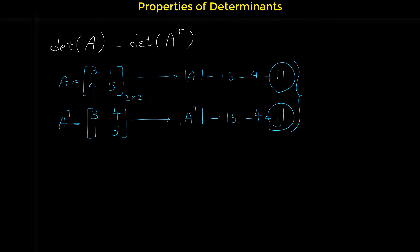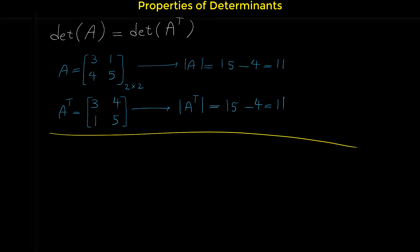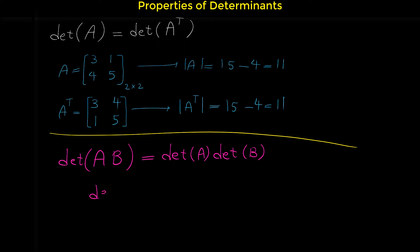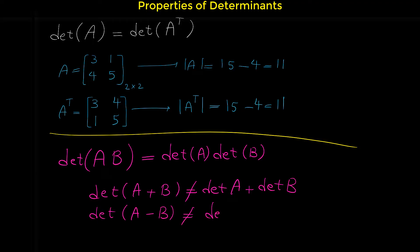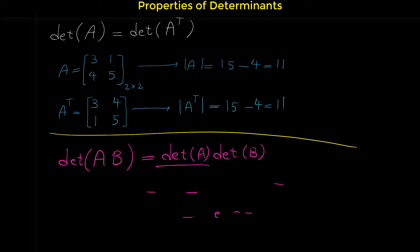So when we transpose a matrix, the determinant doesn't change. The next property is that if we multiply two matrices A times B, the determinant of A times B equals the determinant of A times the determinant of B. Note that for the sum or difference of two matrices we don't have such a property — det(A+B) is not equal to det(A) + det(B), and det(A-B) is not equal to det(A) - det(B).